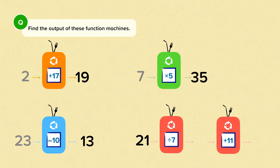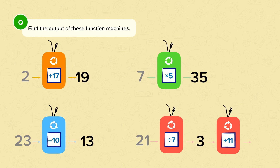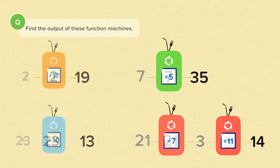This function machine has 2 steps, so we have to be extra careful. 21 divided by 7 is 3. 3 plus 11 is 14.